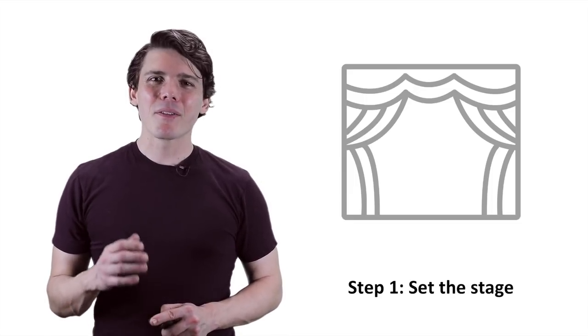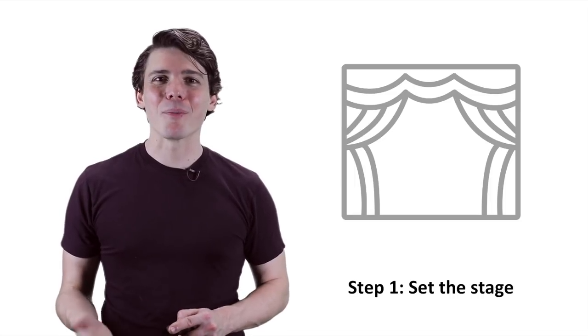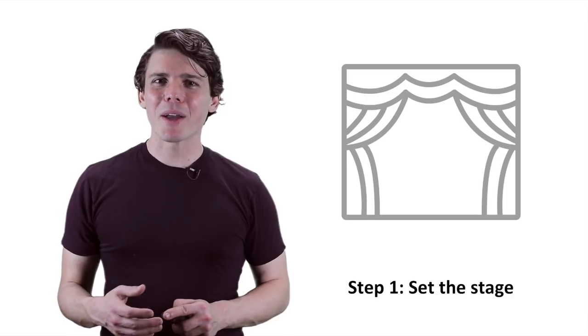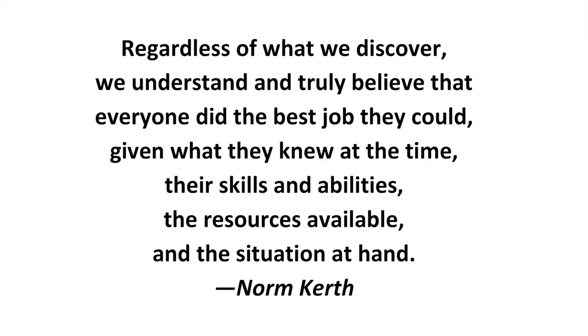Step one is to set the stage. This is a good chance to break the ice with your team, and remind yourself why this is so important. I have a few activities I like for this step, and I recommend choosing two of them. First, I'd suggest reading Norm Kerr's retrospective prime directive as a team, which is, regardless of what we discover, we understand and truly believe that everyone did the best job they could given what they knew at the time, their skills and abilities, the resources available, and the situation at hand. This helps to create a collaborative environment for learning and continuous improvement instead of blaming individuals. Second, I like to ask each team member to share just one word about how the sprint went for them. This will give everyone a good sense of the mood in the room. Third, I like to invite team members to share a genuine word of specific appreciation for another member of the team.